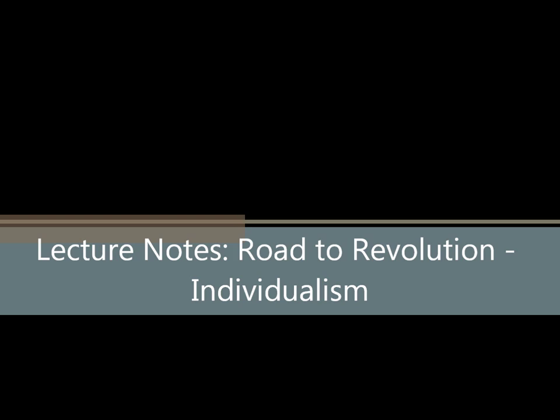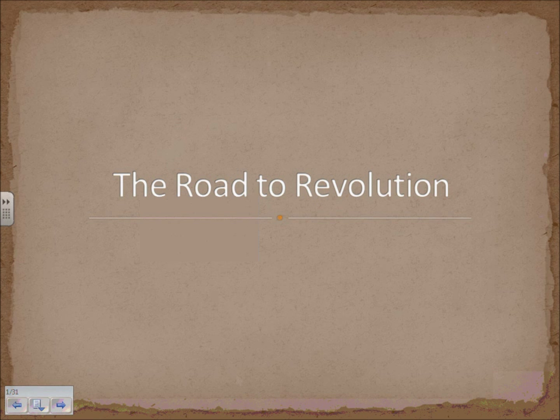This starts our unit two lecture notes. We're looking at the road to revolution. This unit is broken up into three basic parts: the road to revolution, getting to the point where Americans finally revolt against Great Britain; the revolution itself; and the formation of our modern constitution. Let's get going on the road to revolution and talk about how we get from point A to point B.